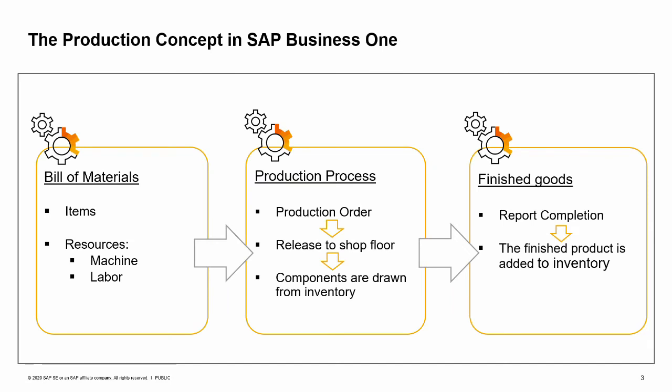In SAP Business One we can manage the company's entire production processes. In addition to items, we can define and manage different resources, such as machinery usage hours and employees' labor time, that are necessary for the production process. In the bill of materials document, we indicate the components and resources needed to manufacture the finished product.